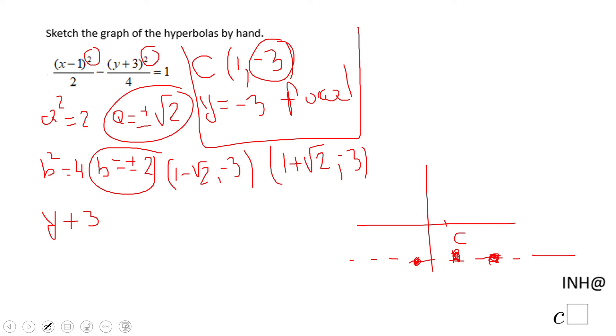equals plus or minus, because we have two asymptotes, b over a, 2 over √2, which is the slope of these two lines, positive 2/√2 and negative 2/√2...